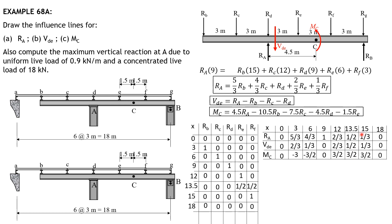When x is 15, only RF is 1, so RA equals one-third times 1, giving one-third. Shear in DE is one-third minus 0 minus 0 equals one-third. Moment at C is 4.5 times one-third equals 1.5 or three-halves. When x is 18, all reactions B through F are zero, so RA is 0, shear in DE is 0, and MC is 0.